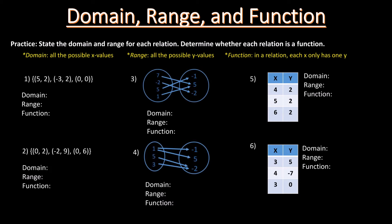Let's do the first question. Domain and range is a set, so we need curly braces. Domain is all possible x-values, so we write {5, -3, 0}. Range is all possible y-values, so we label all y-values: we have 2, 2, 0. For domain and range, we only write a repeated number once, so the range is {2, 0}. Let's check if it is a function: 5 maps to 2, negative 3 maps to 2, 0 maps to 0. Since each x-value only has one y-value, yes, it is a function.